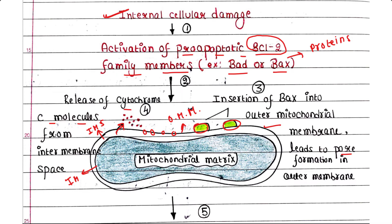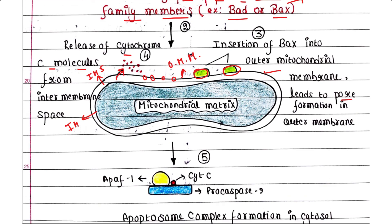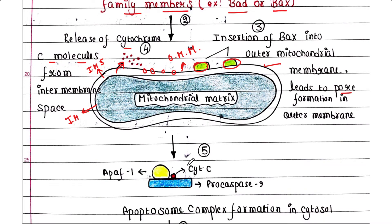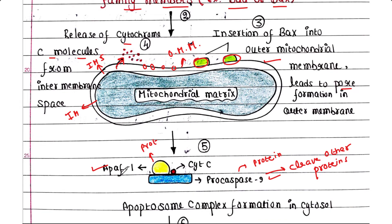Once cytochrome C molecules are released in the cytosol, they will bind to Apaf-1 and pro-caspase-9. Pro-caspase-9 is a protease that can cleave other proteins.